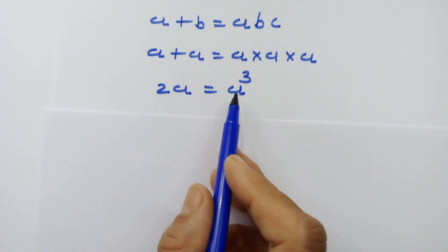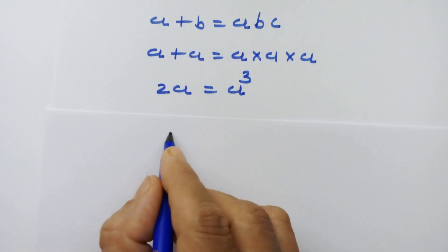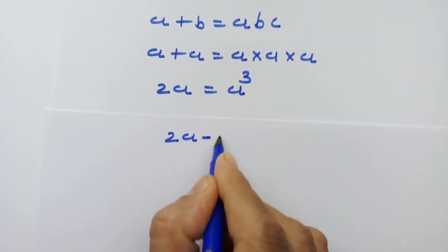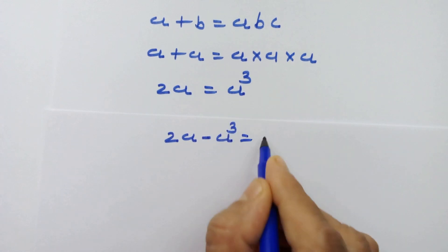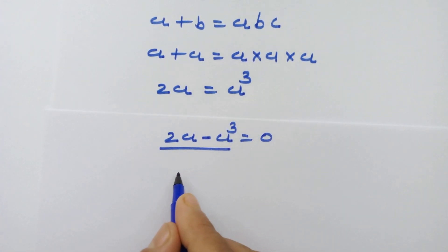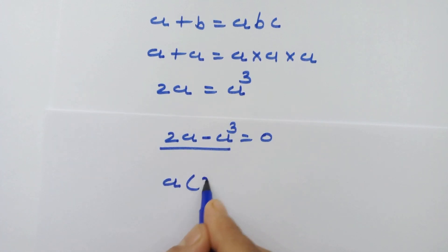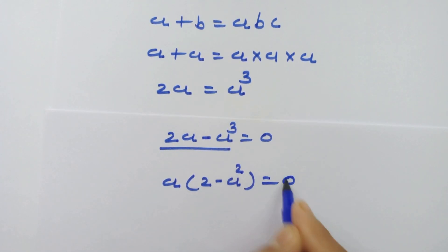Now let's move A cubed to the left hand side. So we have 2A minus A cubed equals 0. Taking A as a common factor, we get A times (2 minus A squared) equals 0.